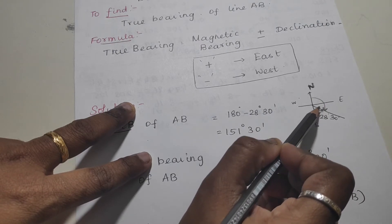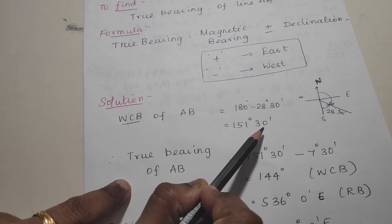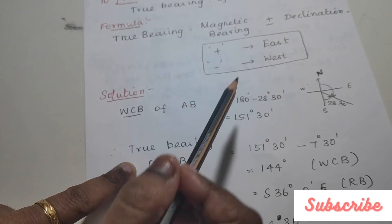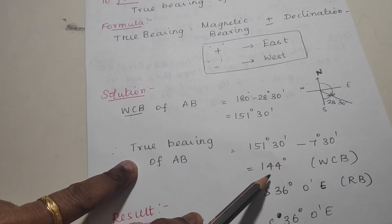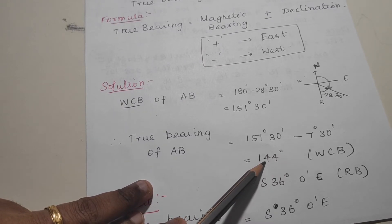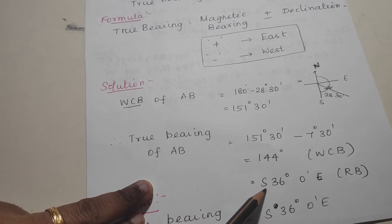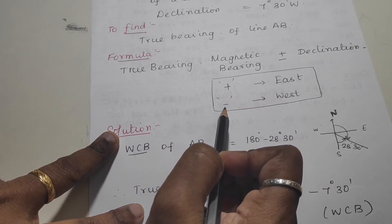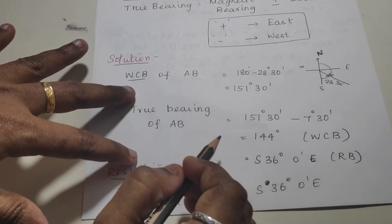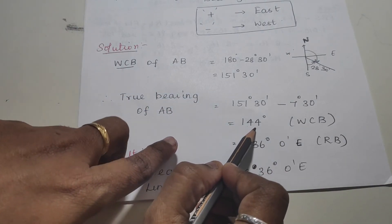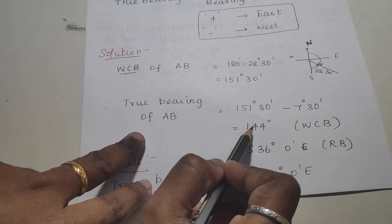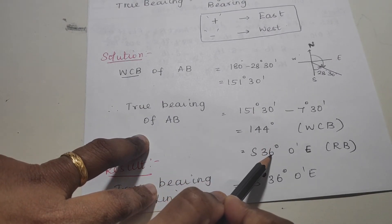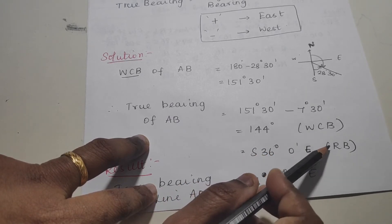For south-east, we compute: 180 minus 28 degrees equals 152 degrees whole circle bearing. For a bearing in the third quadrant (180 to 270 degrees), we subtract 180: 180 minus 144 degrees equals 36 degrees, giving south 36 degrees east as the reduced bearing.